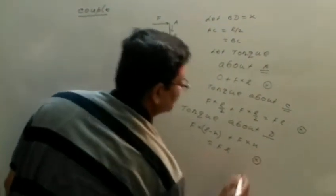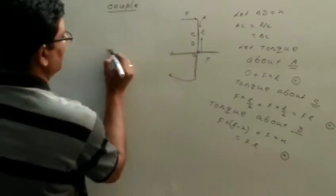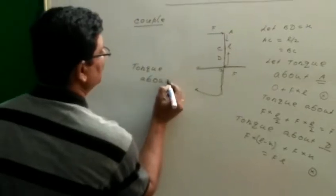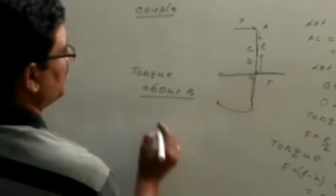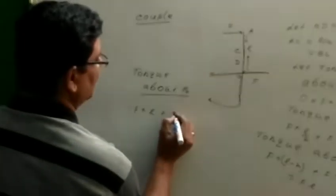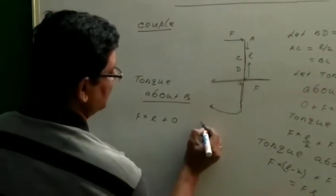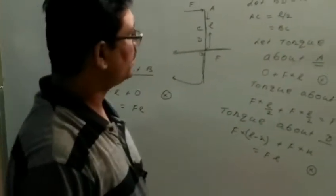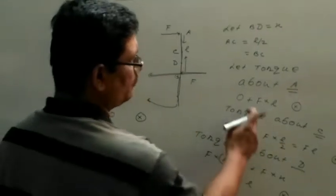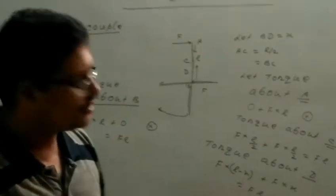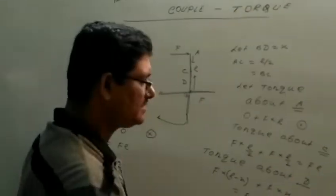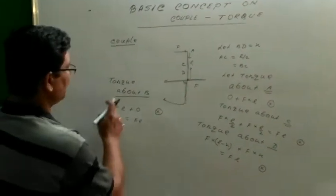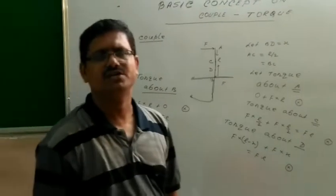Now torque about B. Torque about B equals F into L plus zero, in the inward normal direction, therefore FL. Looking at all points — torque at A is FL, torque at D is FL with the same direction and magnitude, torque at B is FL with the same direction and magnitude, all inward normal.